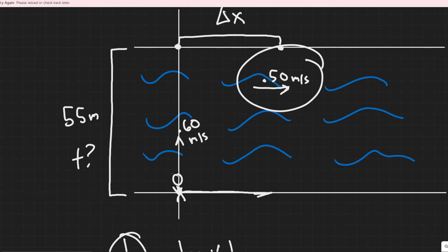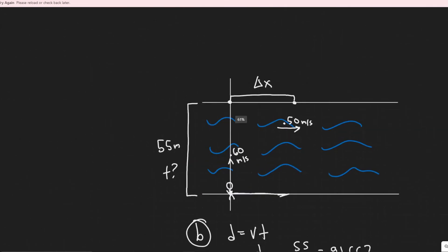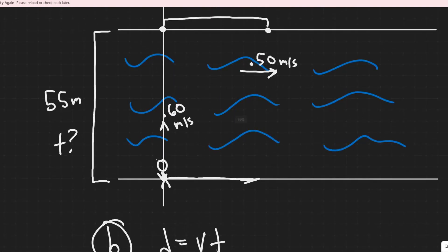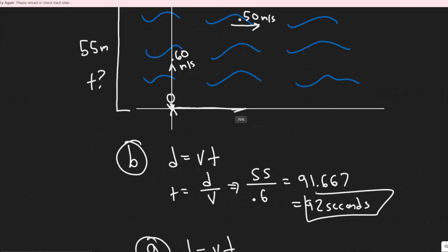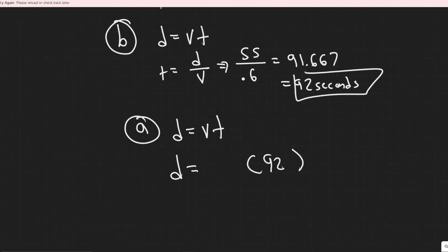So we have the 92 seconds for the time, and then what's her velocity in this direction? So notice the 0.6 isn't impacting her in this way, it's only the river current. So just like in the first part this 0.5 actually didn't matter it was only this way because they're acting straight and not like at an angle. So it's really just going to be 92 times 0.5, and you can just imagine she travels 92 seconds this way at 0.5 meters per second.